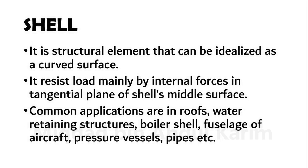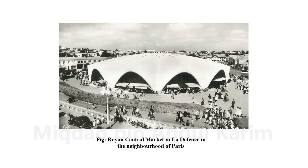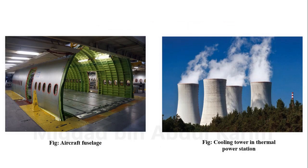Here we can see an example of a shell in the figure. It is a royal central market in the neighborhood of Paris, and its shell thickness is around 18 mm. It is a main structural element used there because it provides economical advantages. We can also see a cooling tower in a thermal power station, which is made of reinforced cement concrete. Another application in the mechanical or aerospace field is the fuselage construction for aircraft, which is also treated as a shell structure.